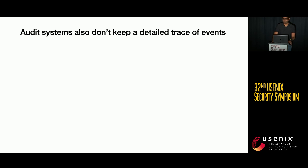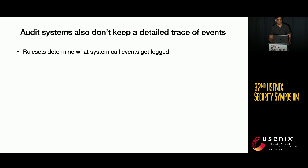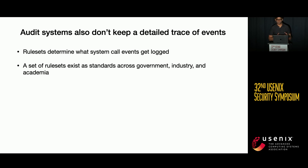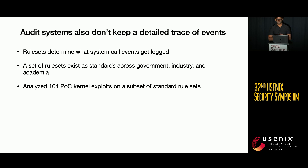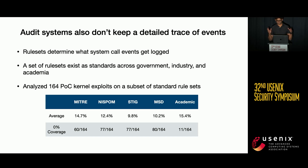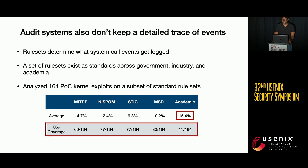Beyond log tampering, there's a second challenge: today's audit systems don't keep a detailed trace of events. Any audit system is configured with a ruleset that determines what system call events get logged. Several influential rulesets exist, considered standard across government, industry, and academia. But when we analyzed 164 proof-of-concept exploits from GitHub to understand event coverage, we found that an audit system configured with these rulesets would cover a significantly low percentage of events — in fact, the highest was just barely 15.4% with the academic ruleset. Most rulesets did not log even a single event for a non-trivial number of exploits, meaning these exploits would fly below the radar of any audit system.